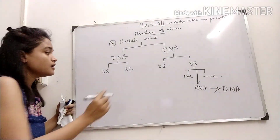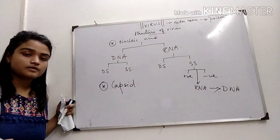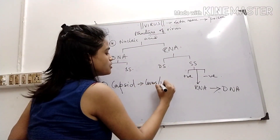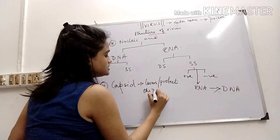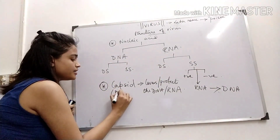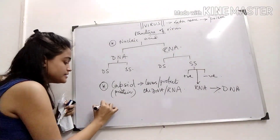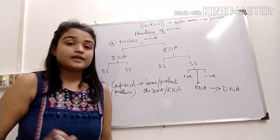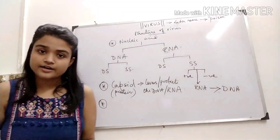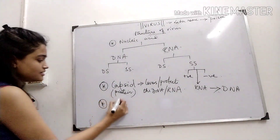We will see this classification. Next, the capsid is present. The capsid covers and protects the DNA or RNA — it is a protein covering made up of protein. Depending on the structure of the capsid, viruses can be classified into three types: complex virus, polyhedral virus, and helical virus. Another structural component is the envelope.